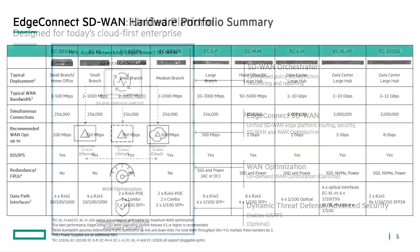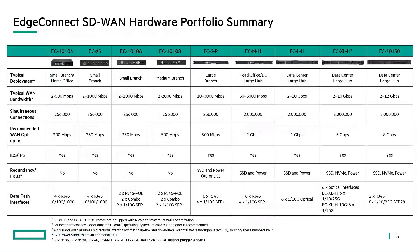Let's take a look at the hardware appliances offered in the EdgeConnect portfolio. There's a multitude of appliances ranging from the EC10104, designed for small branch and home office locations with WAN throughput of up to 500 Mbps, all the way up to the brand-new EC10150, designed for large data center hubs handling up to 12 Gbps of throughput, with functionality like redundant power and redundant SSD NVMe drives.